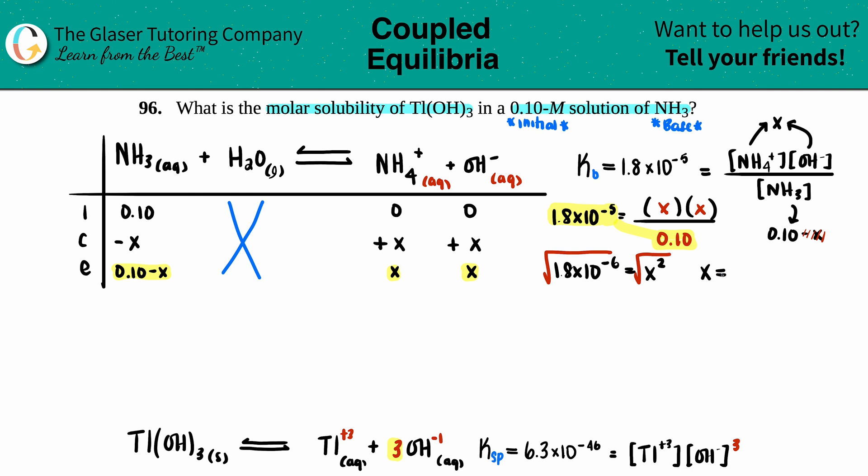Okay, x equals, let's see, square root of 1.8 × 10⁻⁶. I get a really long decimal, so let's just say 1.3416 × 10⁻³.